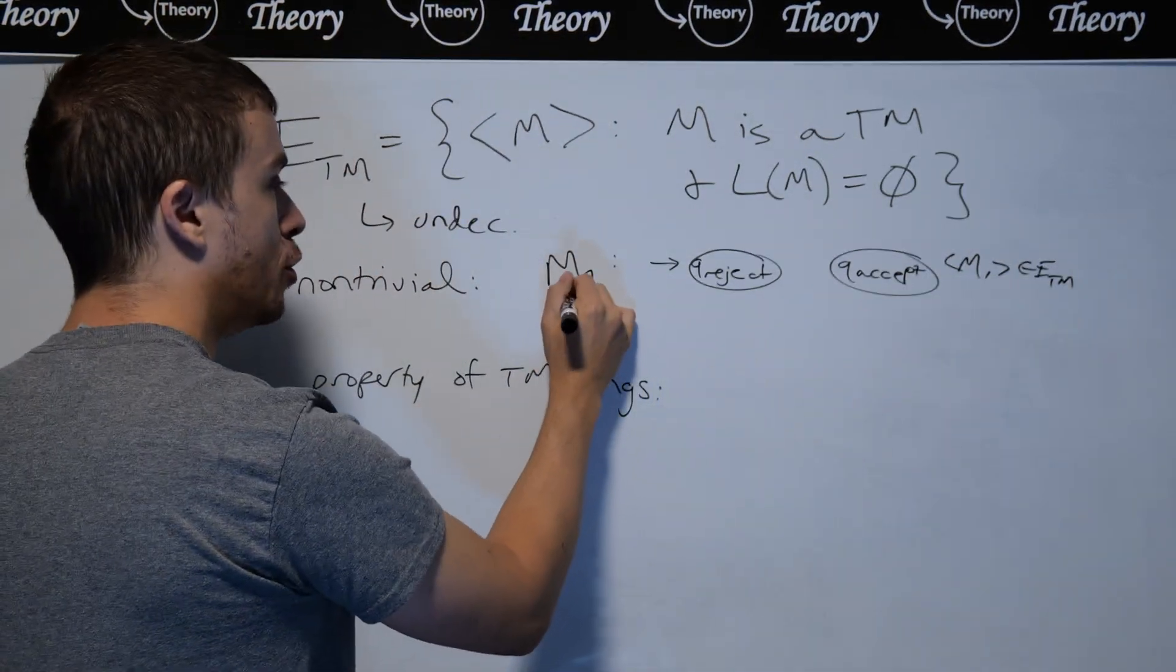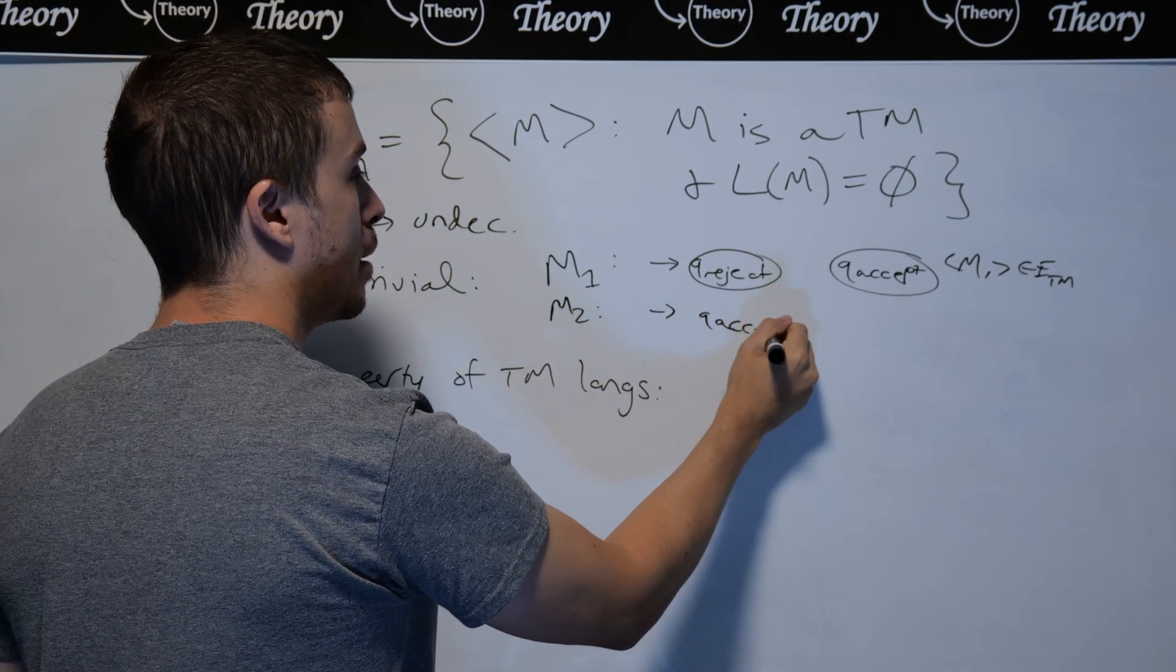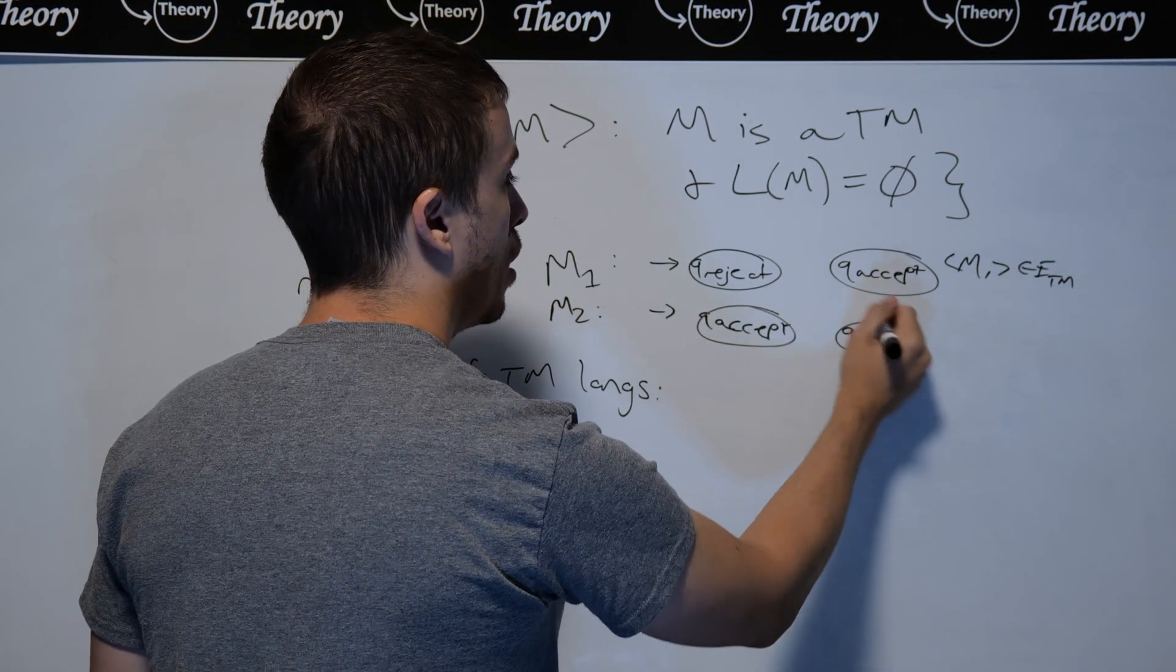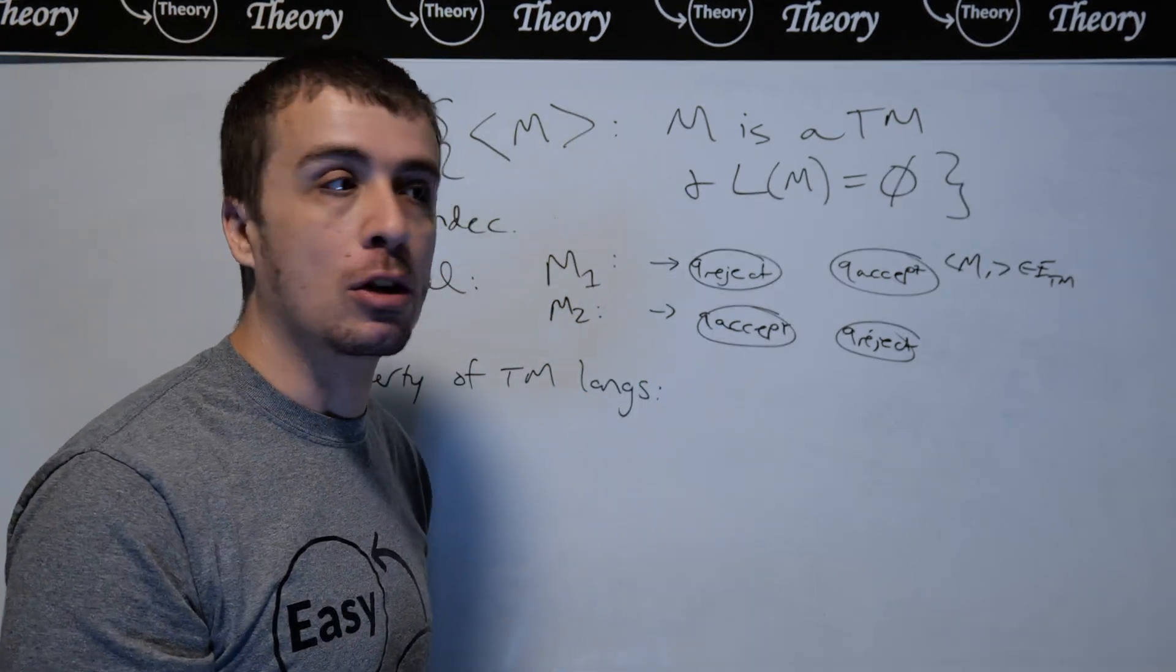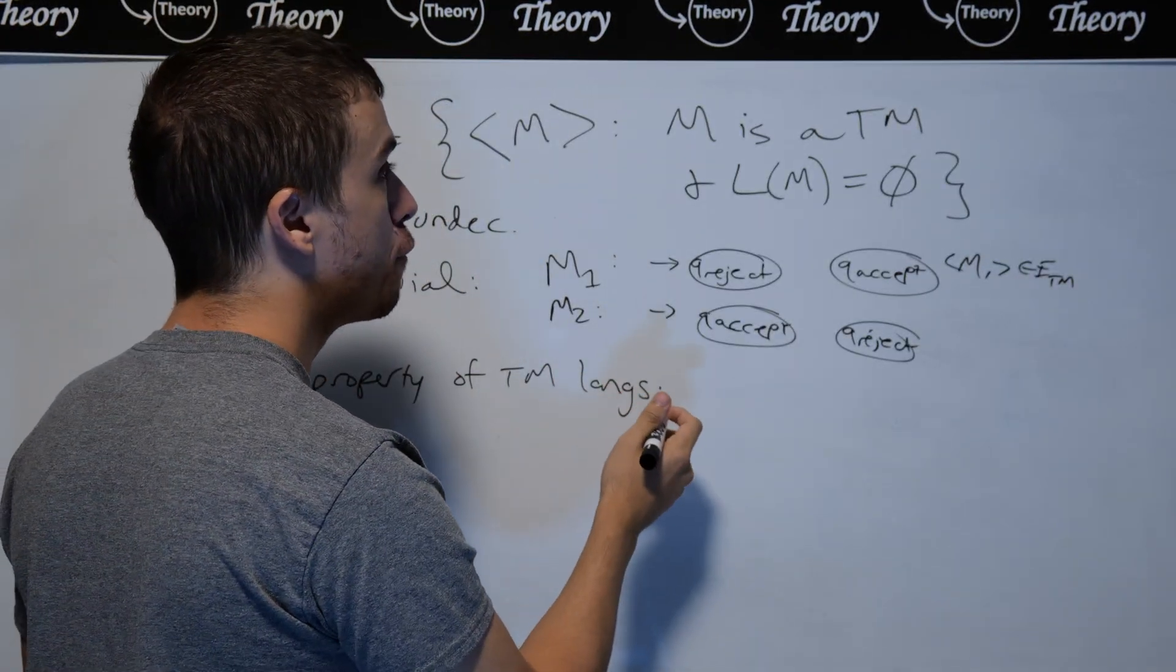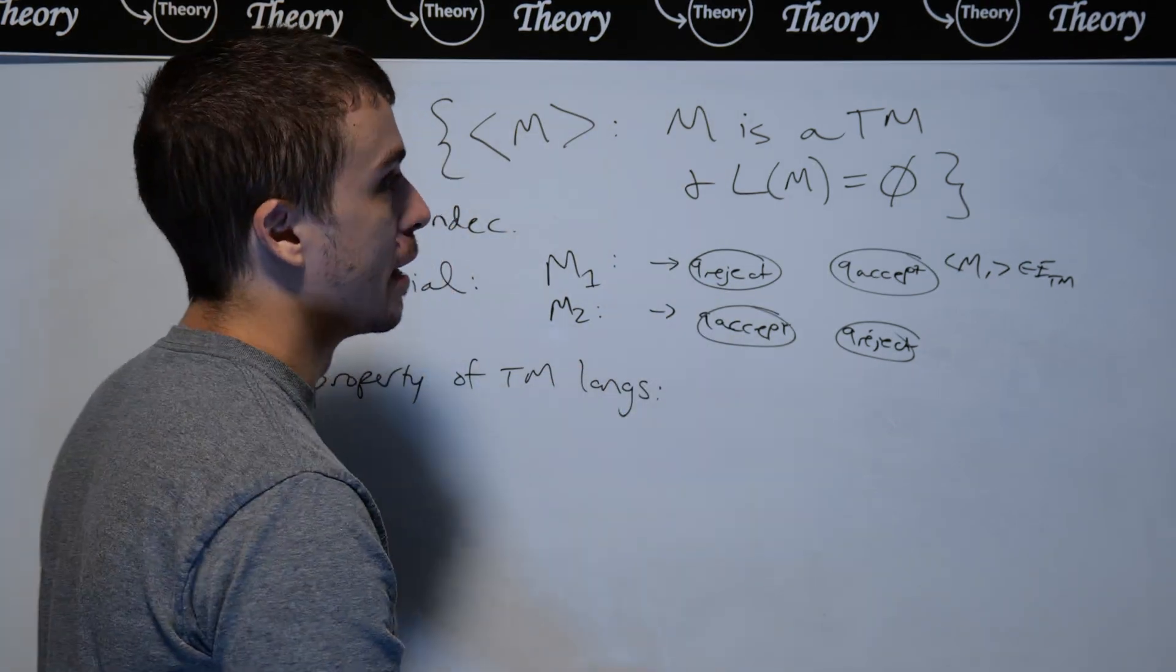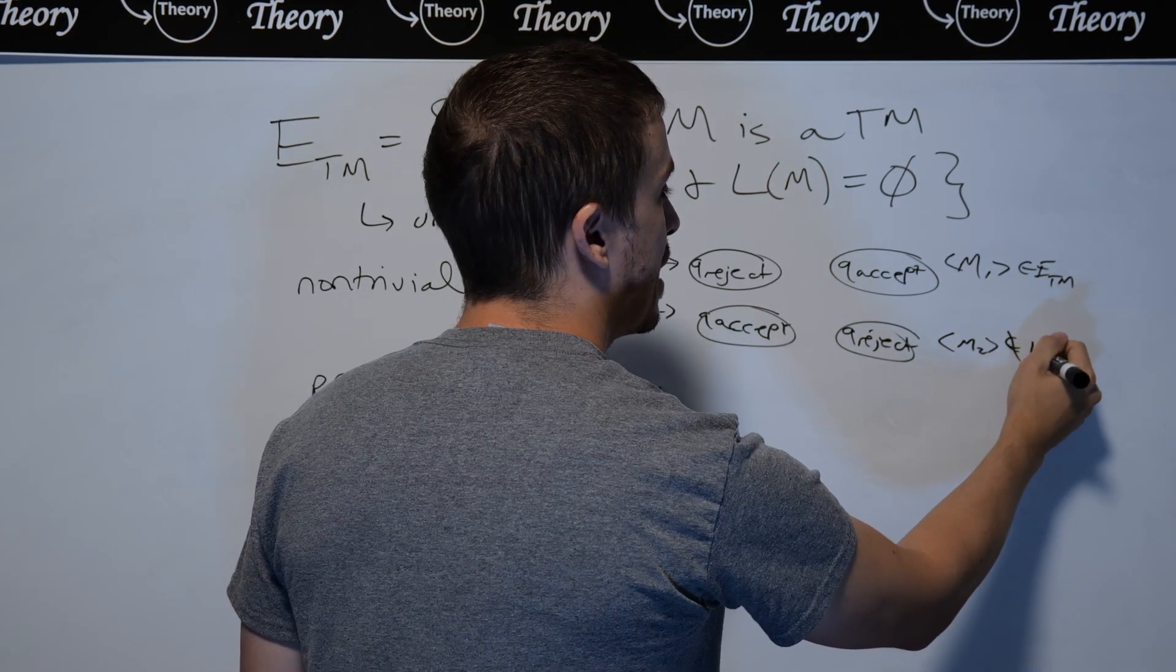If we do the exact opposite scenario where we make the accept state, the start state and the reject state over here not connected at all, then this M2 machine will accept every single string. And then therefore, its language is sigma star. So it accepts everything. And then therefore, M2 is not in ETM.